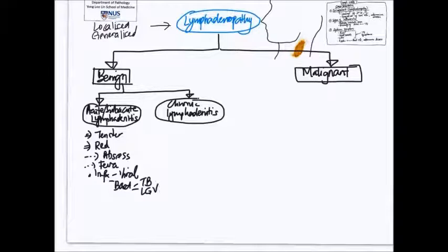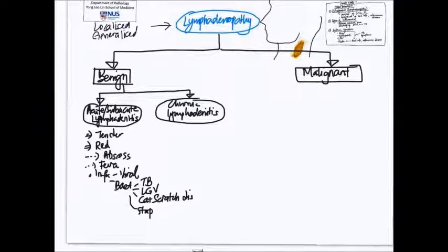There is chlamydia which gives rise to lymphogranuloma venereum, a sexually transmitted disease that often involves the inguinal lymph nodes. Then there is cat scratch disease caused by Bartonella henselae, another type of bacteria. There can also be staphylococcal infection, which can sometimes lead to suppurative lymphadenitis or abscess within the lymph node.